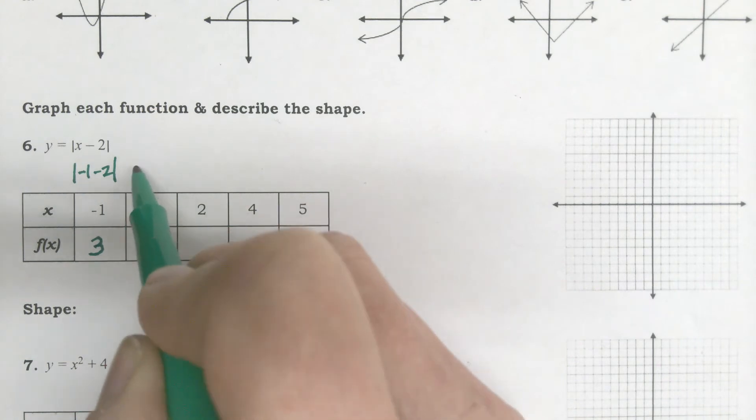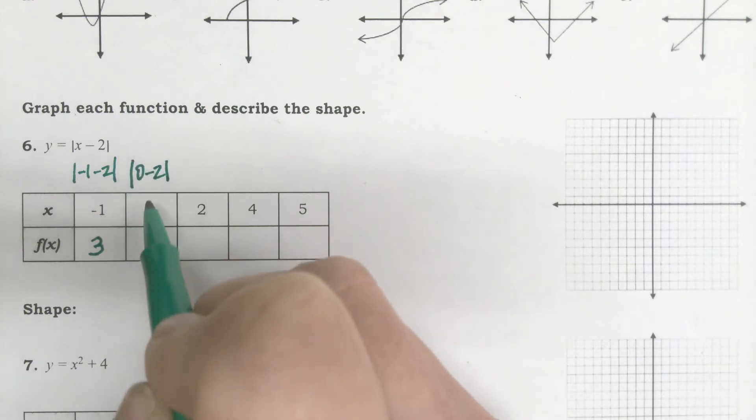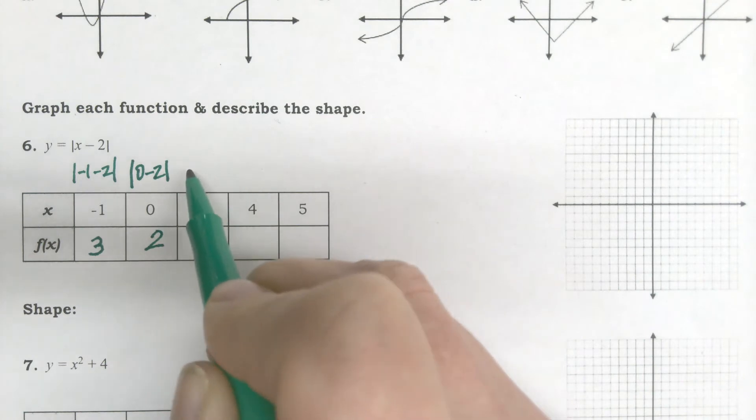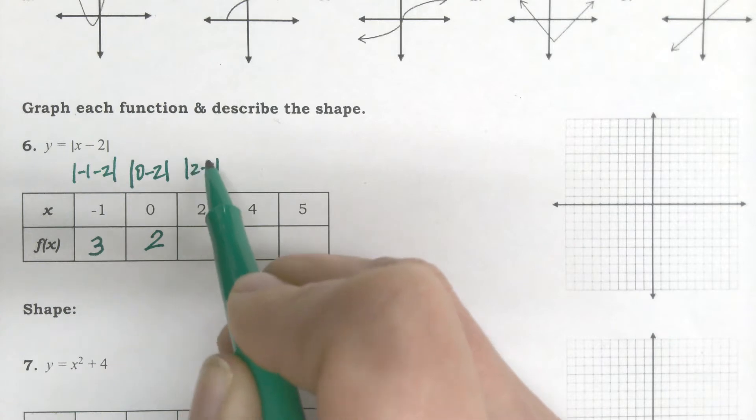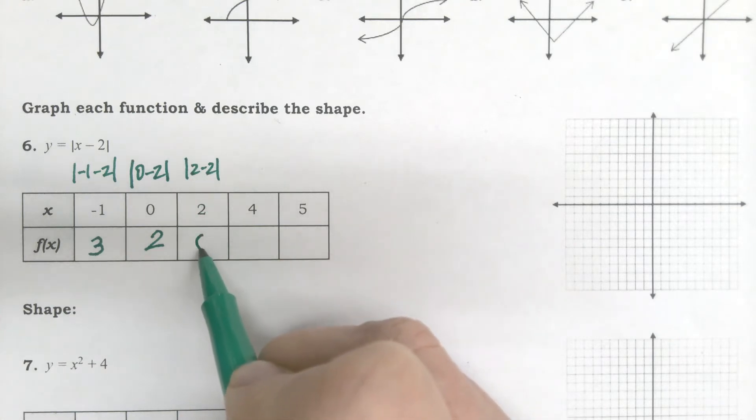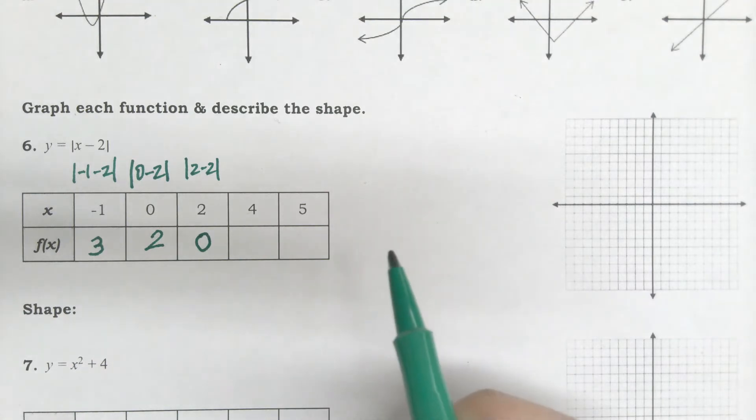So, then I put 0 in for x. So, this is 0 minus 2. 0 minus 2 is negative 2. But, the absolute value makes it positive. So, I make it positive 2. Then, up next is 2 minus 2. Well, 2 minus 2 is 0. 0 is not positive or negative.